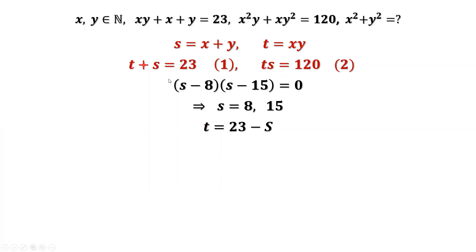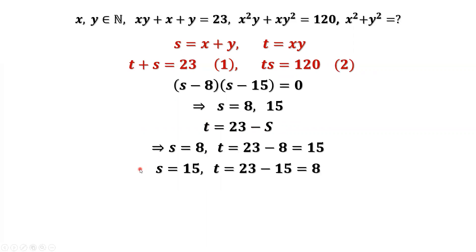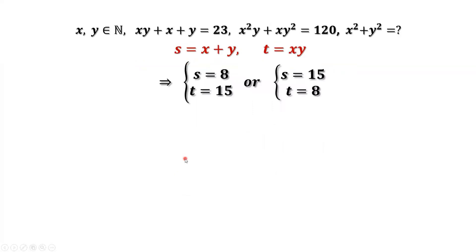s equals 15. Because t equals 23 minus s, we have two t values corresponding to two s values. When s equals 8, t equals 15. When s equals 15, t equals 8. The two variables are symmetric. This means we have two sets of solutions for s and t.